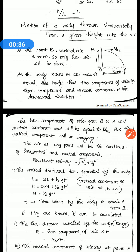This body has two components of velocity: the horizontal component and the vertical component. The vertical component is in the downward direction. The horizontal component of the velocity from B to A will remain constant — we say that the horizontal component of the velocity is constant.